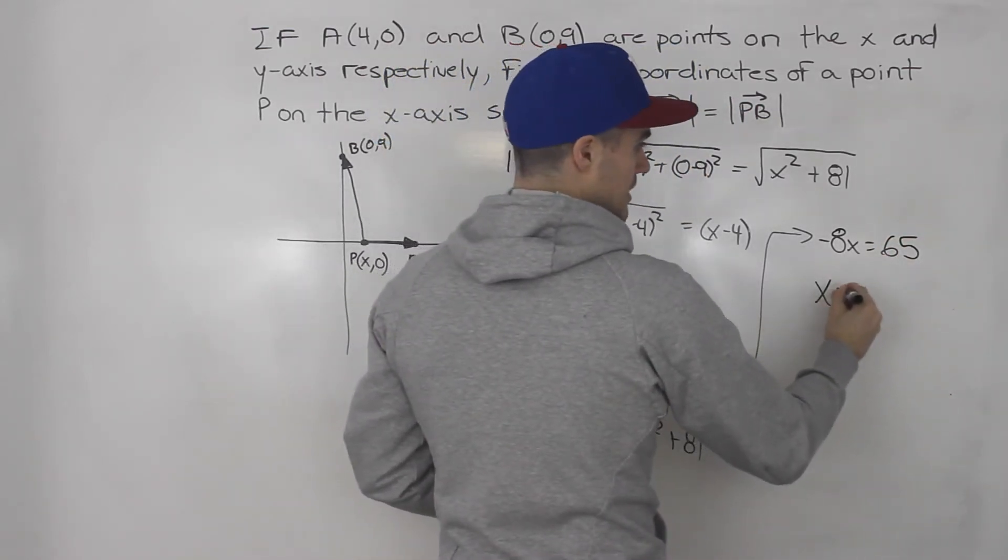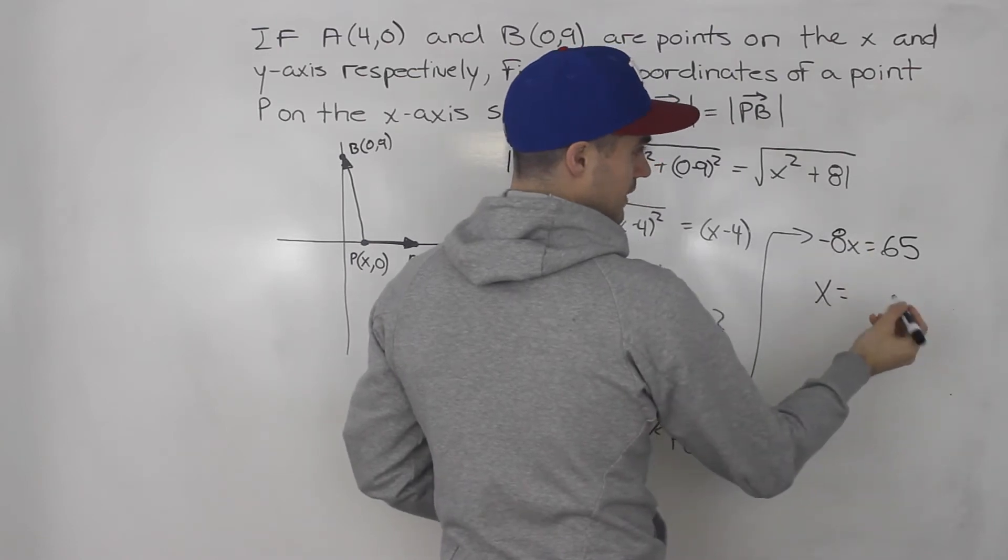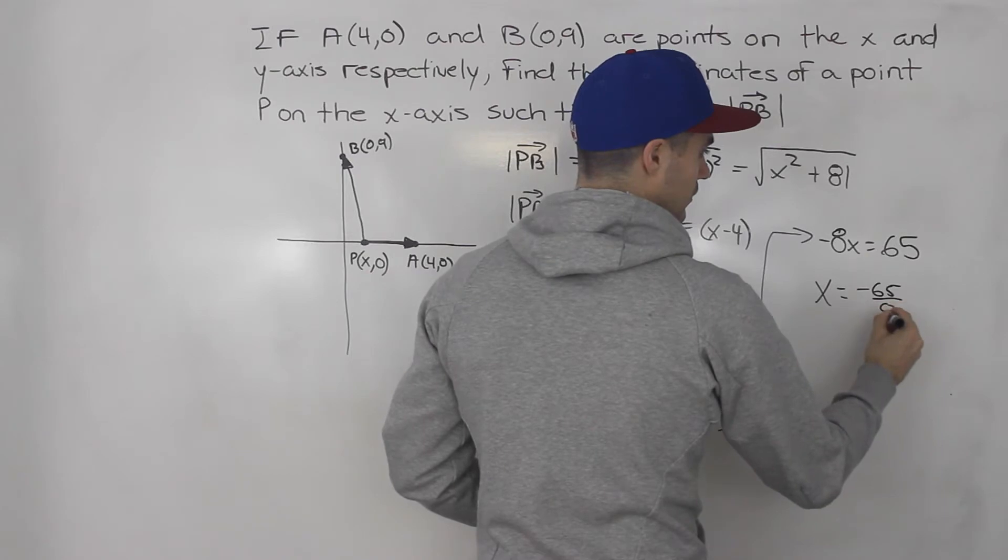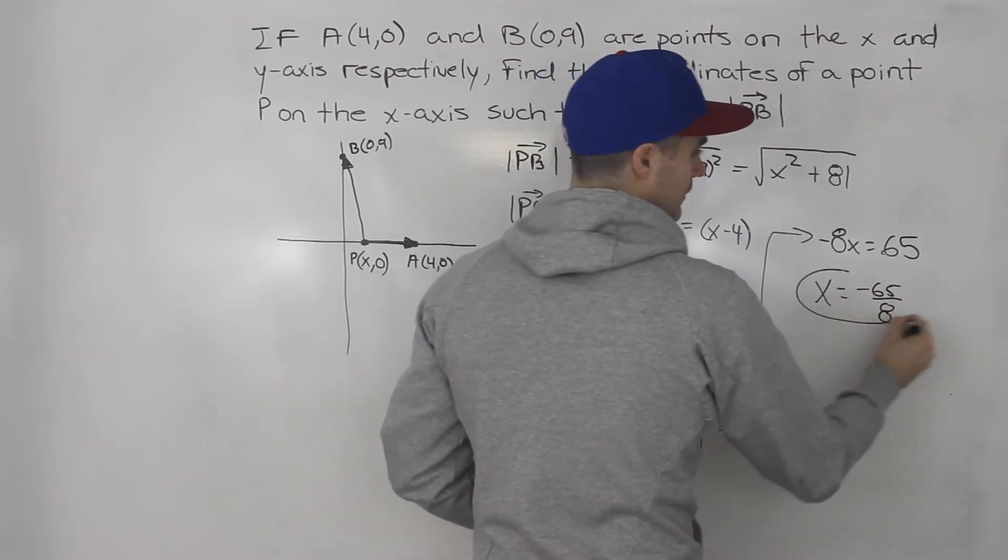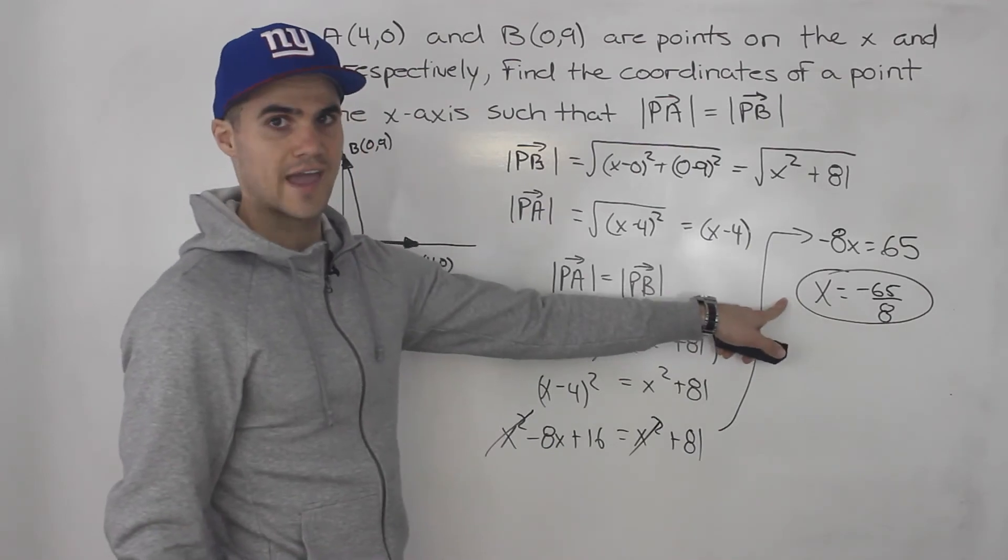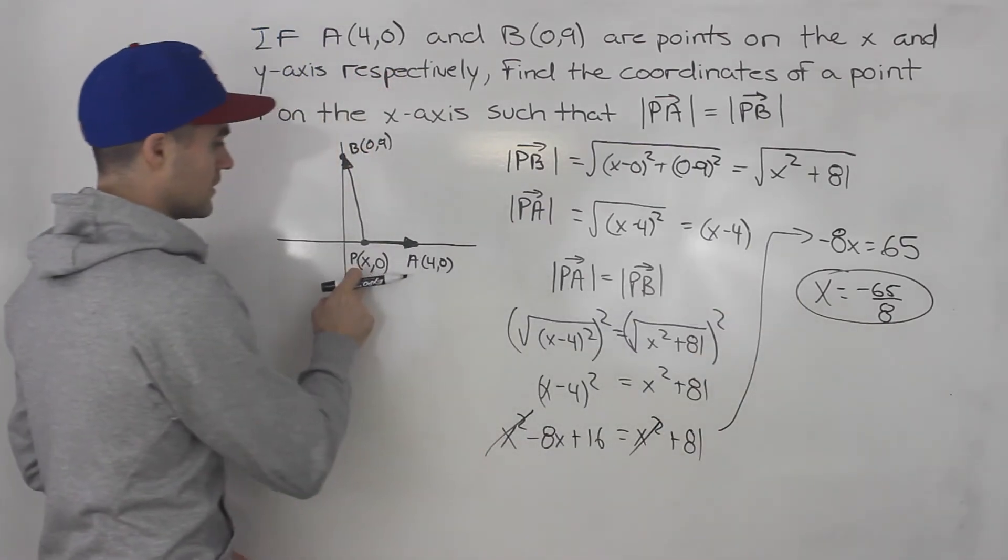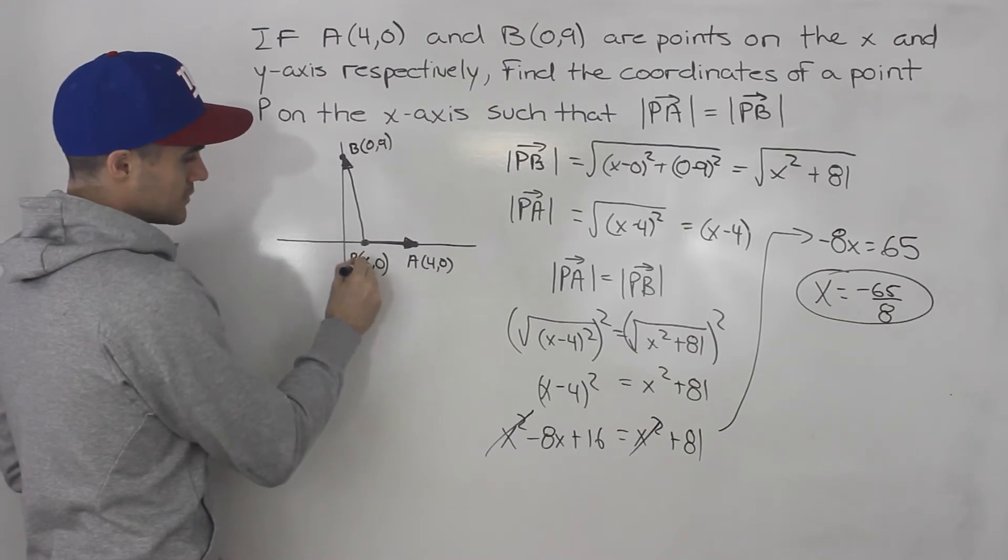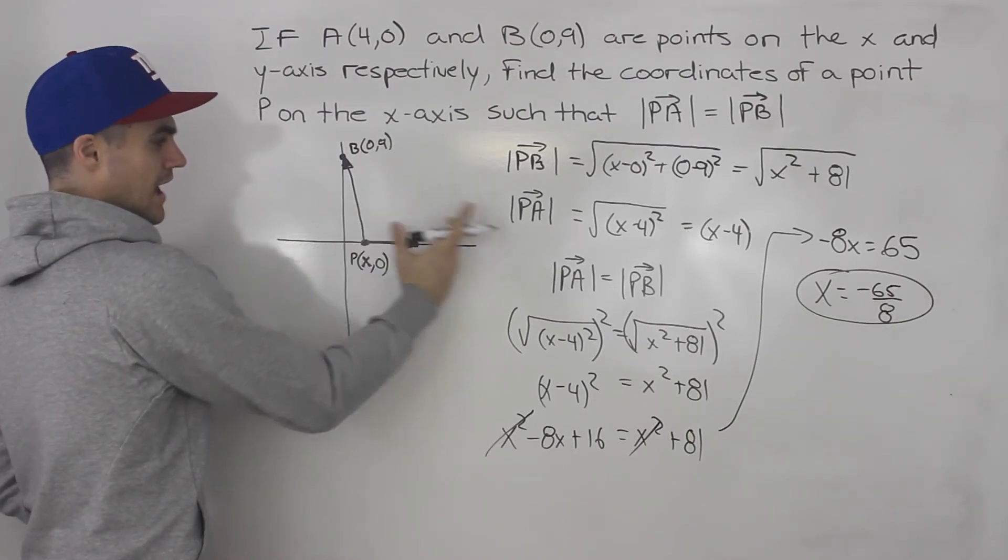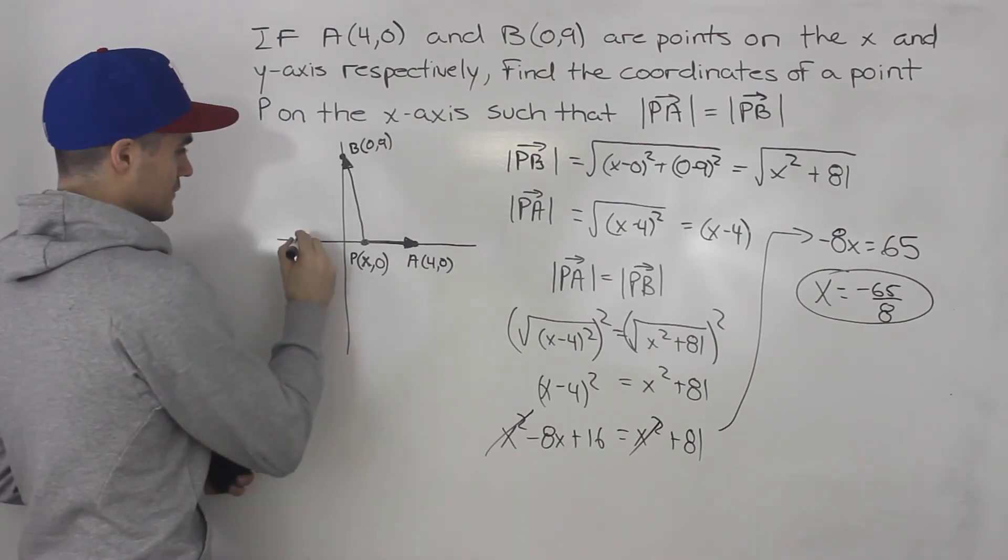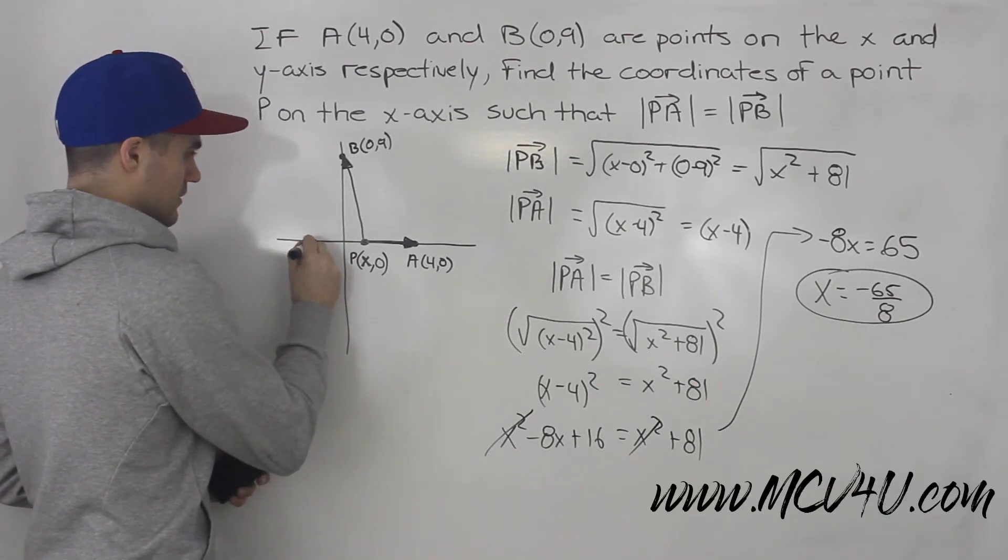To isolate for x, divide both sides by -8. So we end up with -65/8. That's actually our x value. Notice this x value is negative. Over here, even though we kept this x value general, because it's on this side of the y-axis we're assuming it's positive. But in fact, it's actually negative. It's going to be somewhere here.